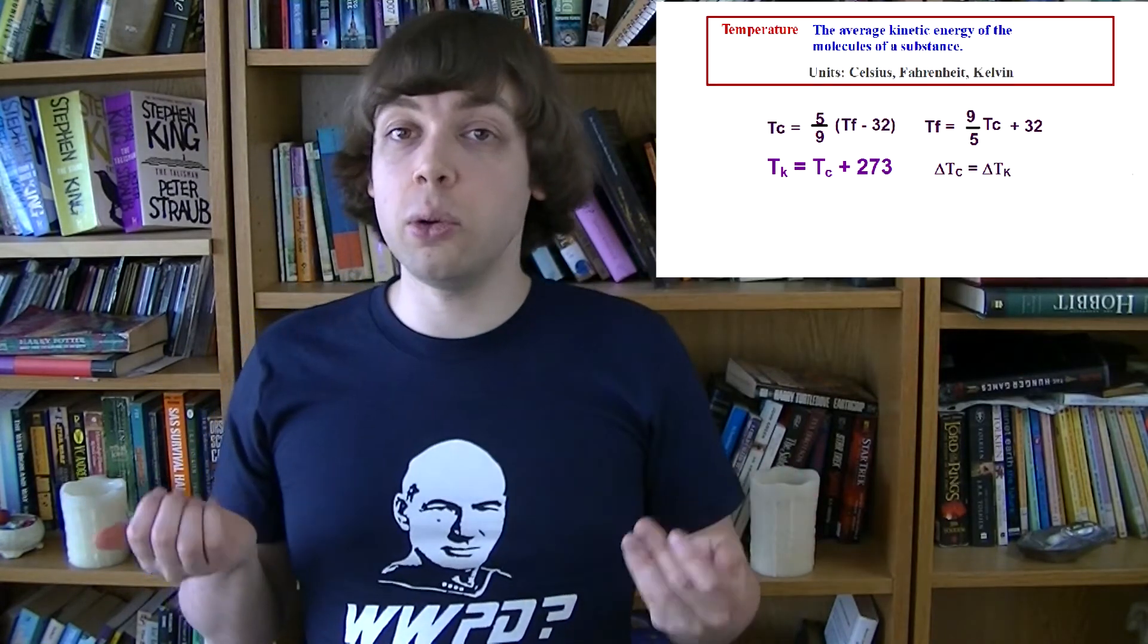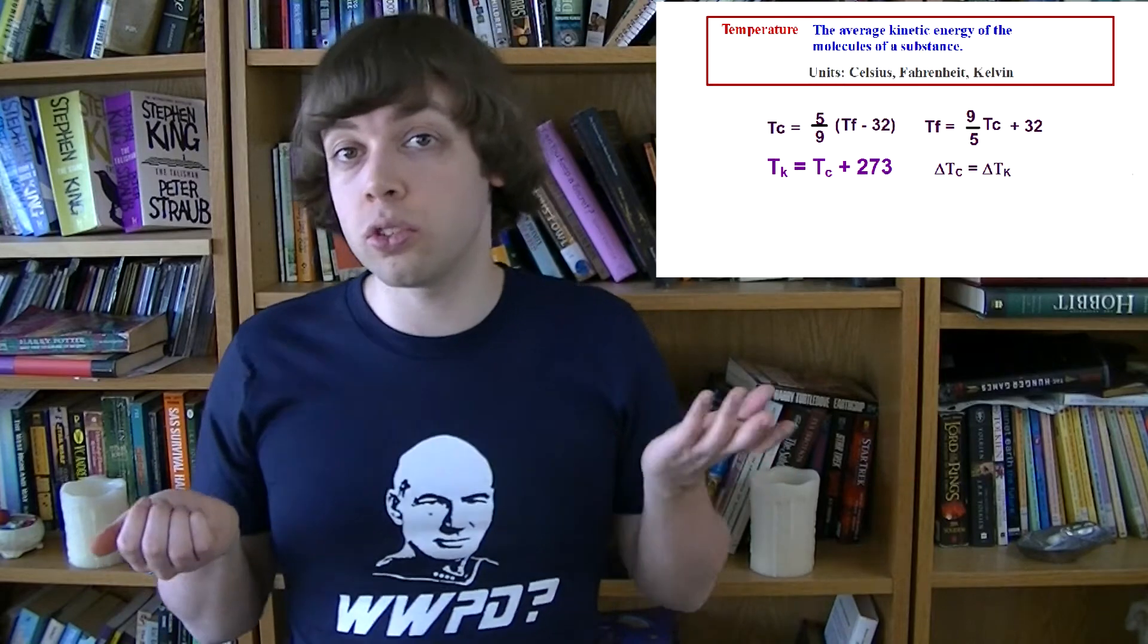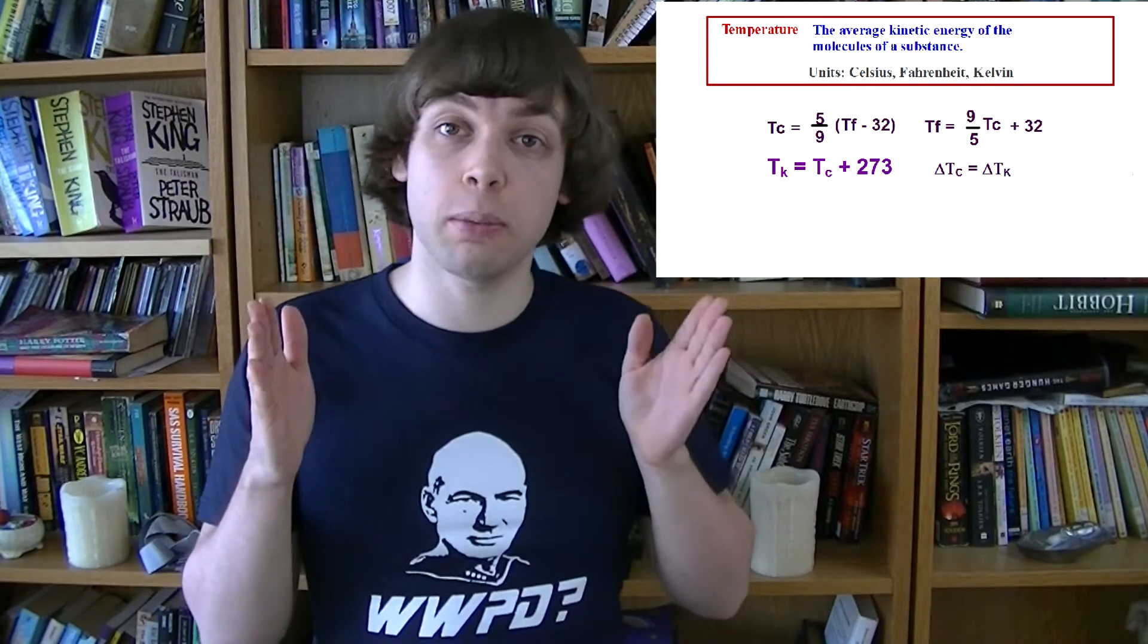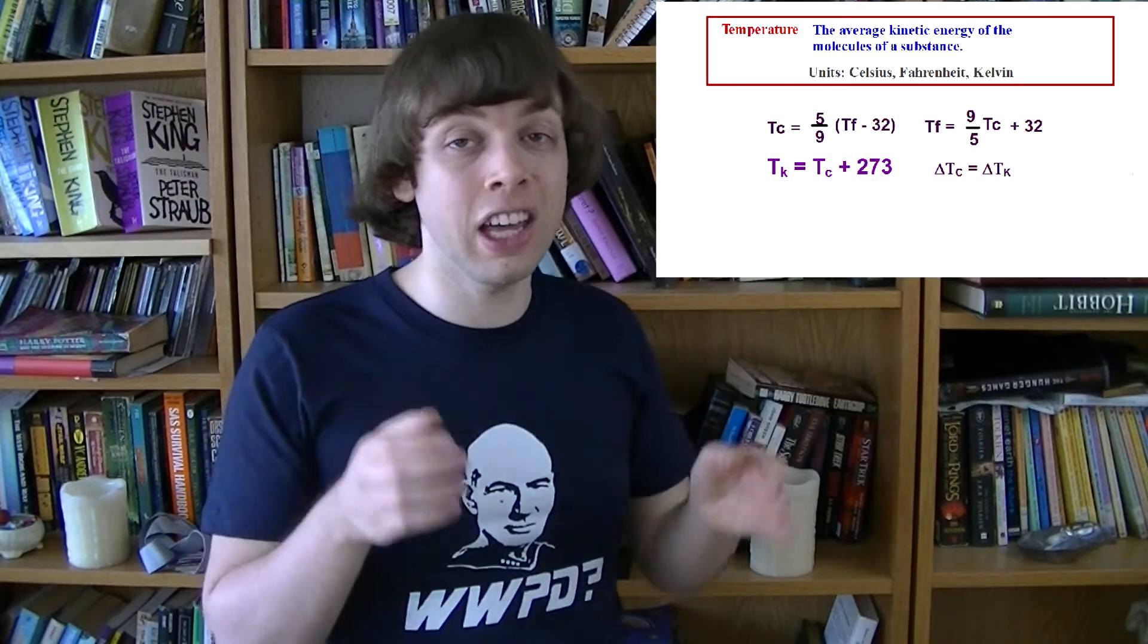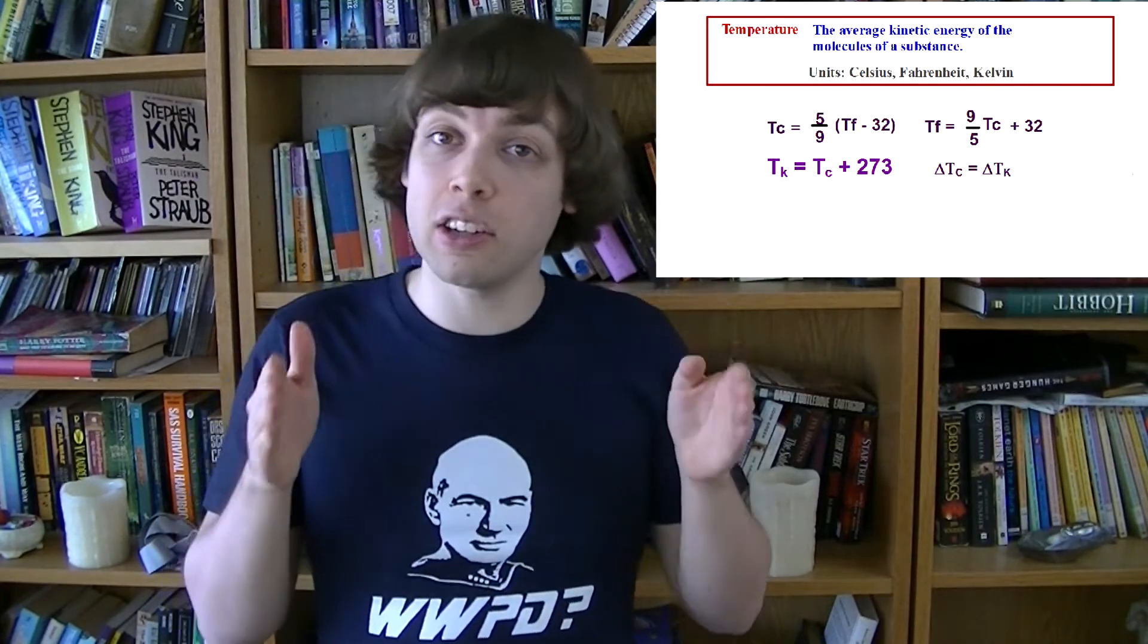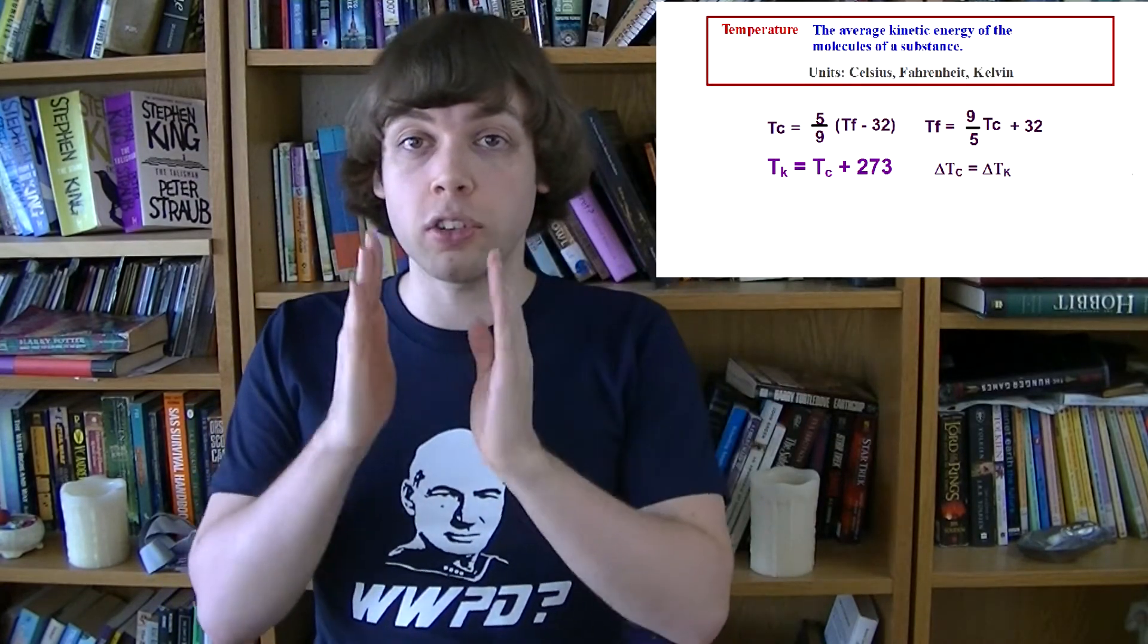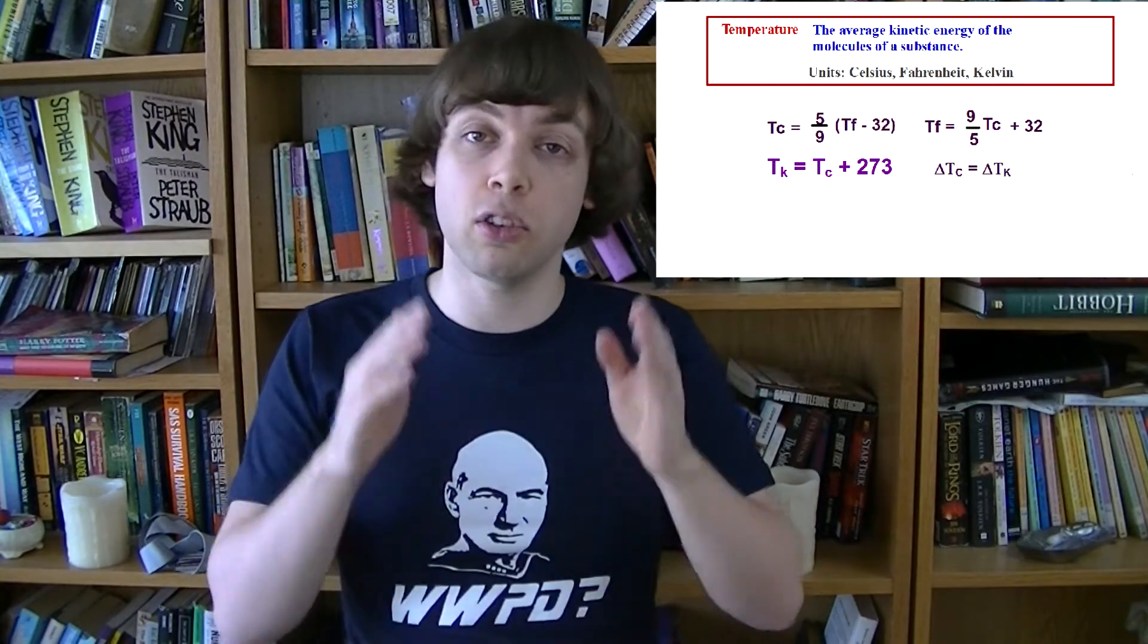So converting between Celsius and Kelvin is easy. All you have to do is just add or take away 273. And it also means that if you change your temperature by 30 degrees Celsius, you've also changed by 30 Kelvin, because the size of one degree Celsius is the same as the difference of one Kelvin.